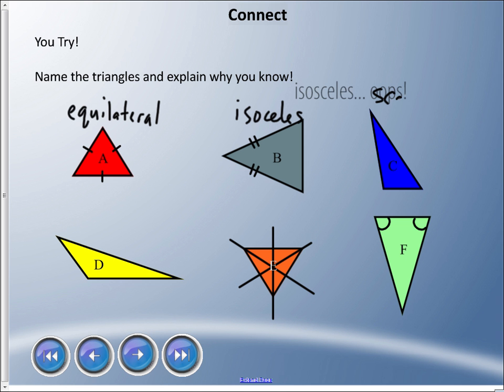If we go to D, again, I don't see any hatch marks. I don't see any angles that are showing me that they're the same. It's got to be a scalene. E, I have drawn some lines in there, and that is showing me that there's three lines of symmetry. Three lines of symmetry—it's got to be an equilateral triangle.